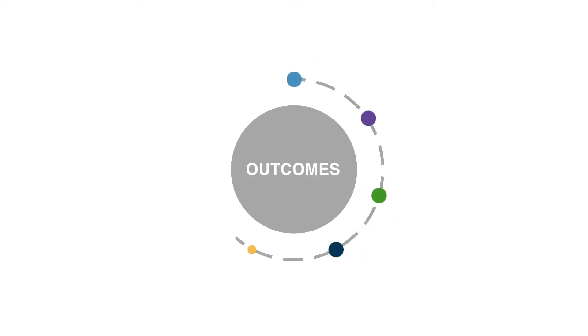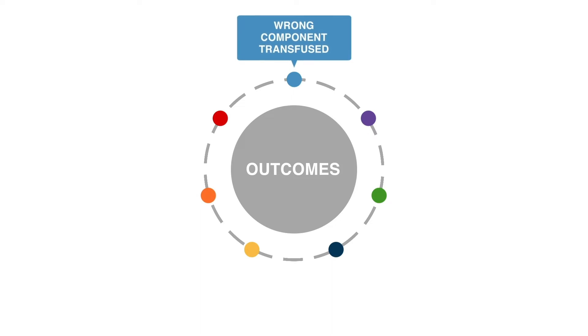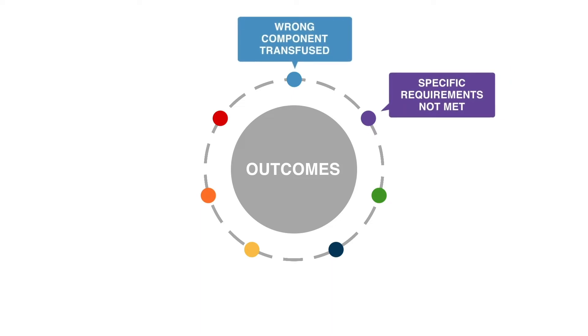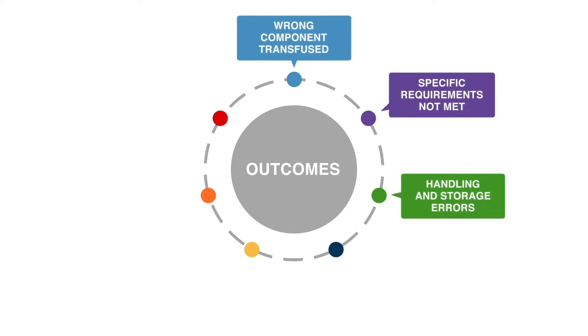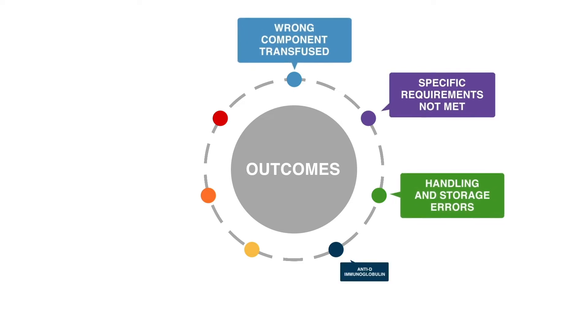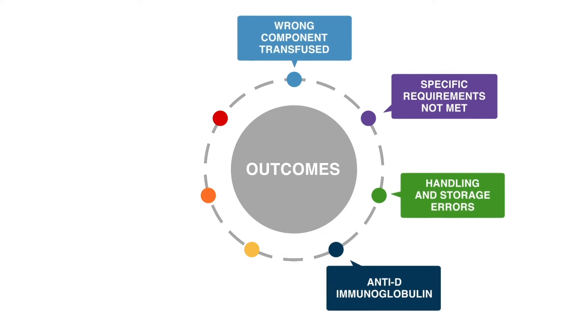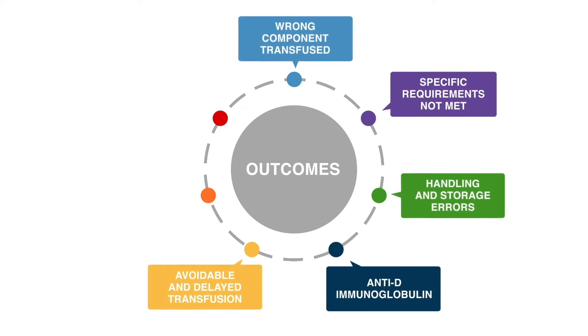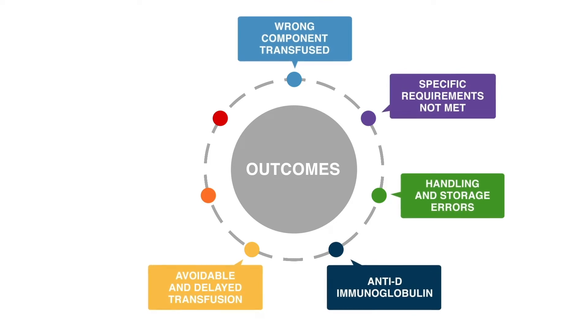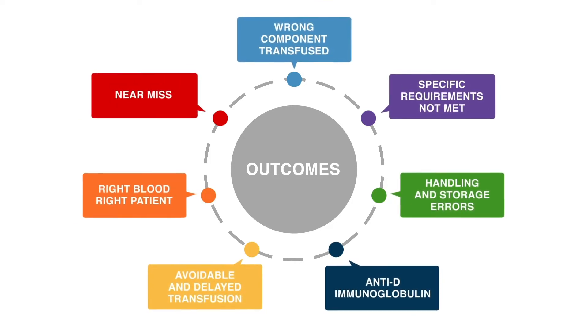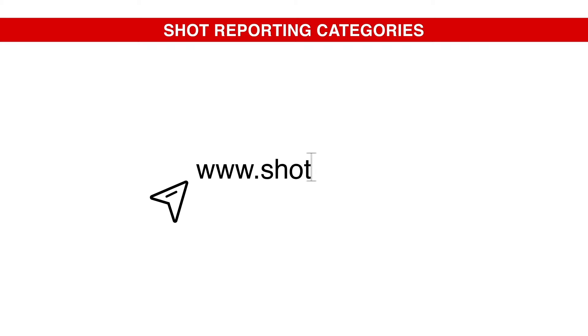On average, one-third of the total incidents reported to SHOT originate in the laboratory. Laboratory errors have resulted in the wrong component being transfused, components where the specific requirement was not met, handling and storage errors, errors associated with late administration and omission of anti-D immunoglobulin, avoidable and delayed transfusions, and near miss incidents. For more information on SHOT reporting categories, please visit the SHOT website at shotuk.org.